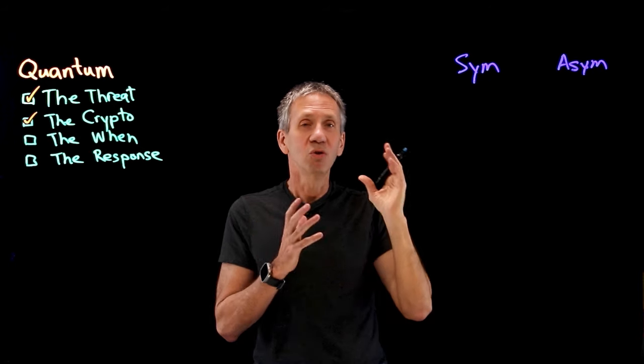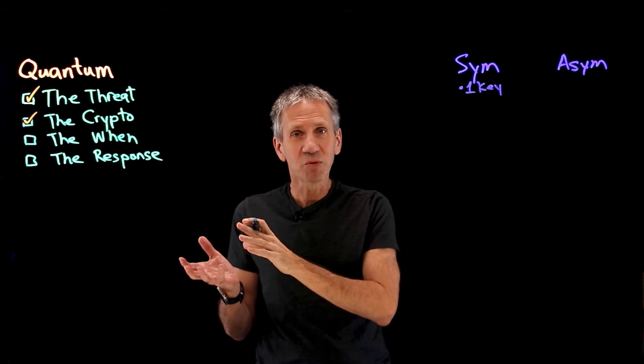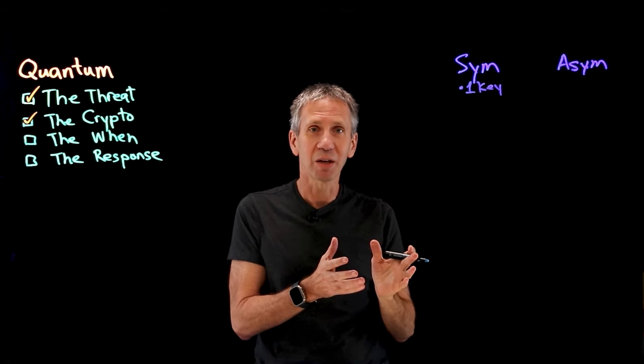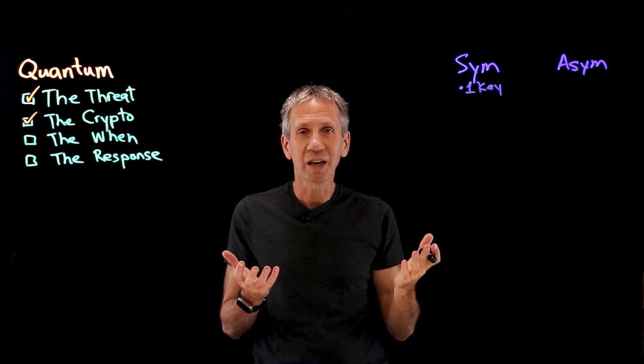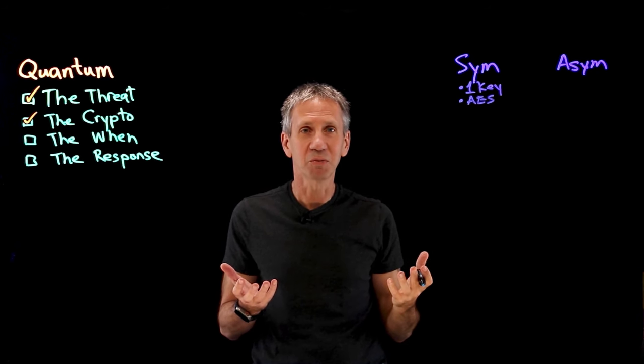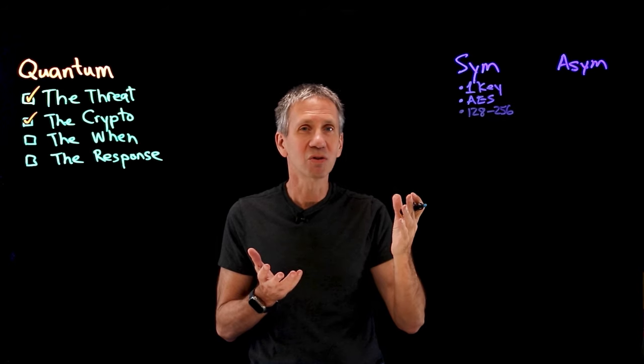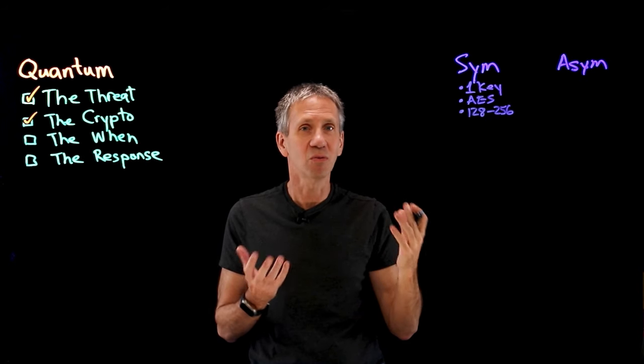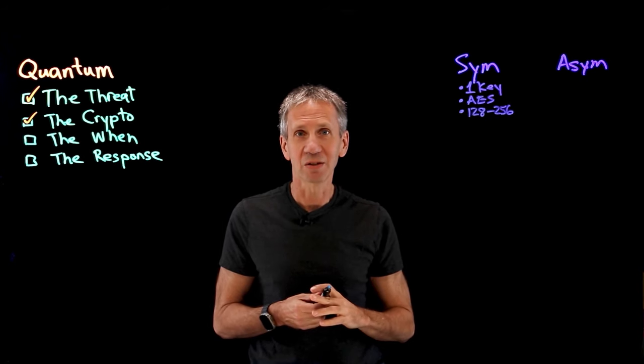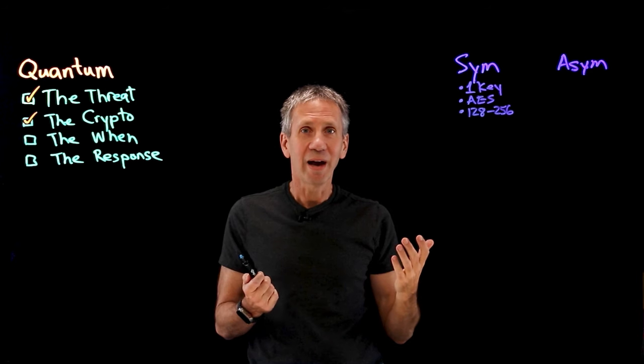Symmetric algorithms use one key. You encrypt with that key, you decrypt with the same key. Most common example of this is the AES encryption standard. And the key lengths are normally in the 128 to 256-bit range in terms of their size.